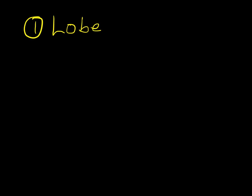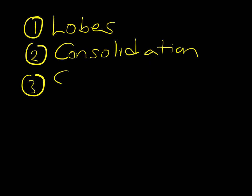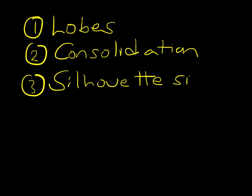During this lecture you've learnt about three main areas: number one, the lobes of the lung; number two, the radiographic appearance of consolidation, particularly as it applies to pneumonia; and number three, the silhouette sign. The next two workshops are going to consolidate your knowledge — excuse the pun — and then see whether you can apply these new skills to the interpretation of some chest X-rays. Thank you for listening.